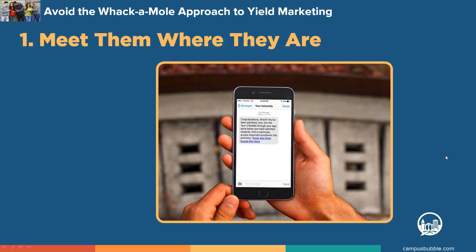A good example is phone calls. Many admissions directors are still calling students, but students — if you have any teenagers at home — don't really want to talk on the phone. An admissions director we spoke with told us that most of his counselors were in their mid-20s and didn't like calling admitted students. He had to get professors and deans to make those calls because his counselors weren't interested. When it comes to meeting students where they are, text is gaining a lot of momentum in admissions, whether in the research phase or the decision phase, and it has a lot going for it.